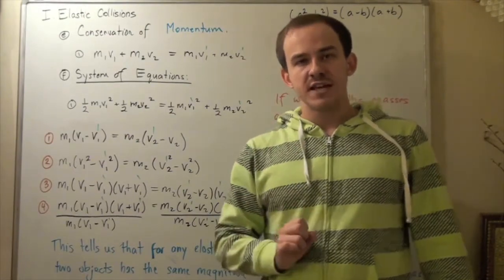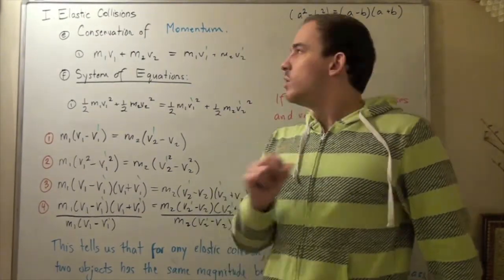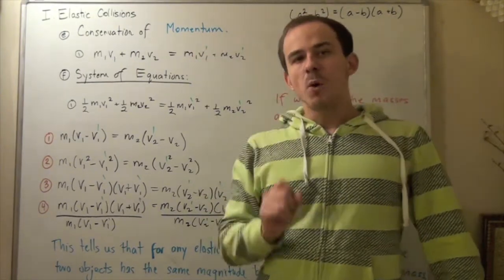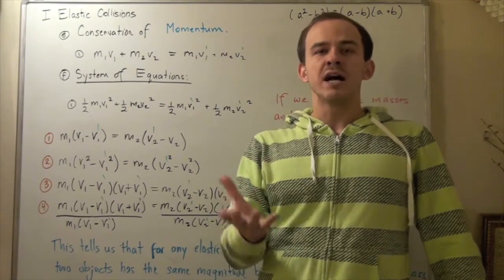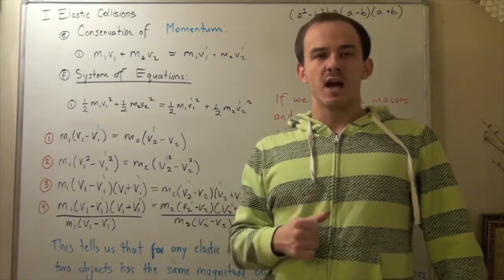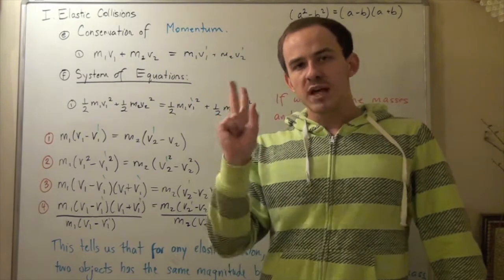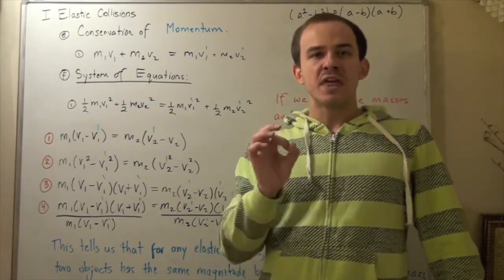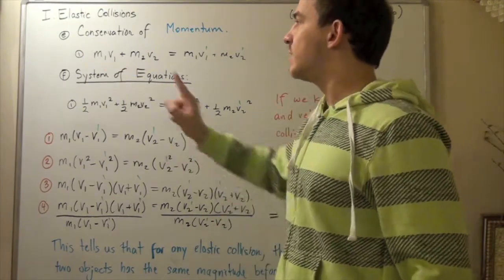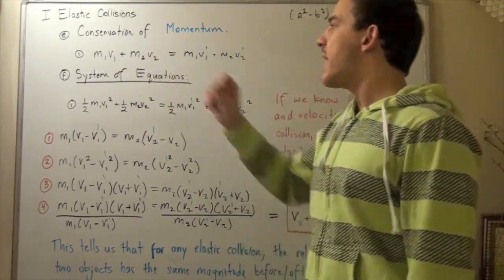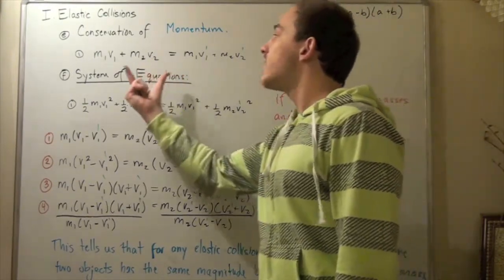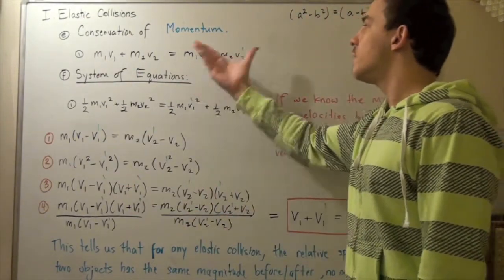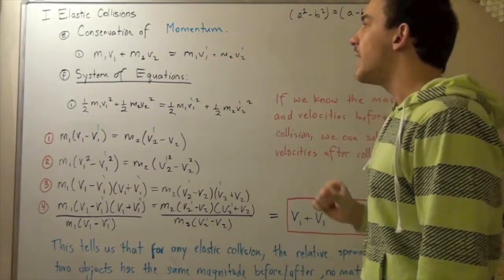Not only is there conservation in mechanical energy whenever we talk about elastic collisions, but there's also conservation in momentum. Momentum is simply the product of the mass multiplied by the velocity of that object. Suppose we have two objects, mass 1 and mass 2, that have those same speeds. Mass 1 has a velocity of v₁, and mass 2 has a velocity of v₂. The sum of their momentum initially is equal to the sum of their momentum at the final condition.